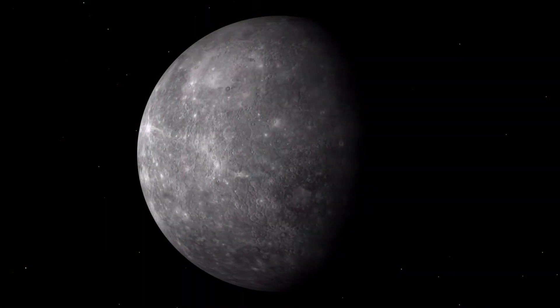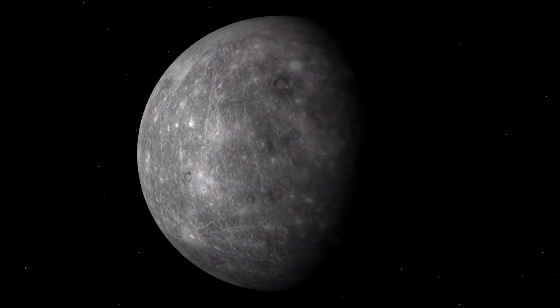At perihelion, Mercury's distance from the Sun is only about two-thirds of its distance at aphelion.